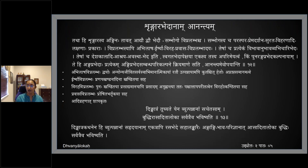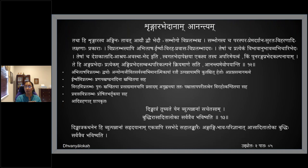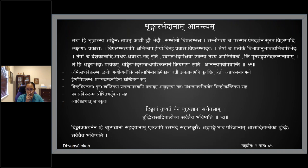Vipralambha has four main divisions: abhilasha, irshya, viraha, and pravasa. He says in Lochanam he gives a definition for all four types. Abhilasha vipralambha — dvayo ho anyonya jivita sarvaswa abhimanat — even though the nayaka and naika feel they cannot live without each other, jivita sarvaswam, and there is such rati between them.